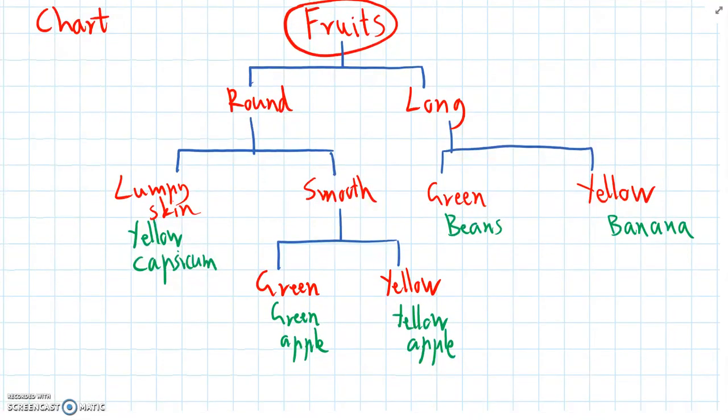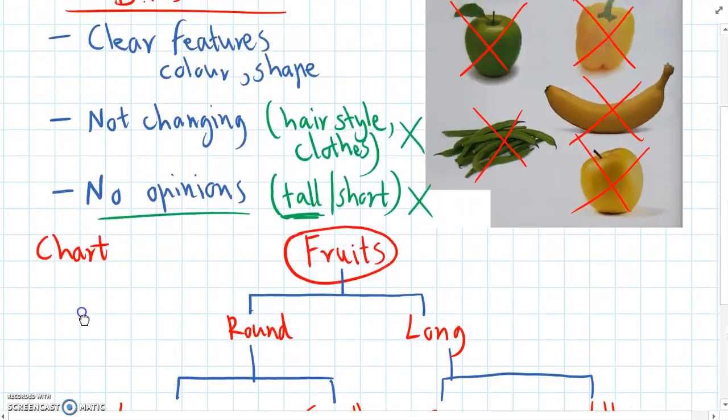Just one final comment, which is, there isn't one specific way to make a dichotomous key.